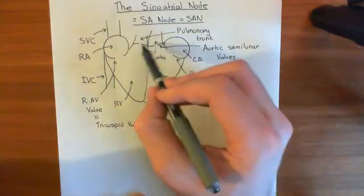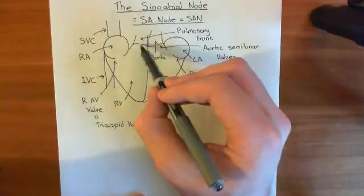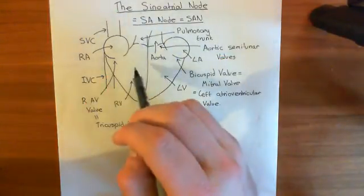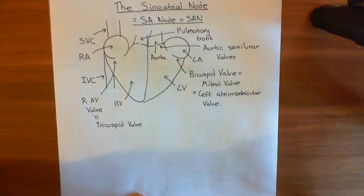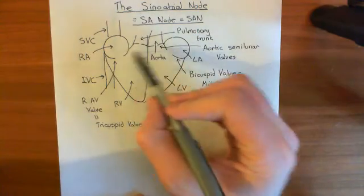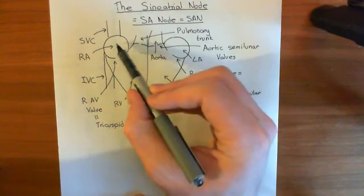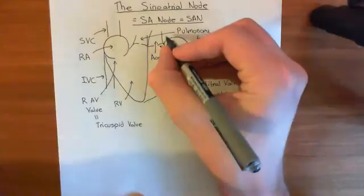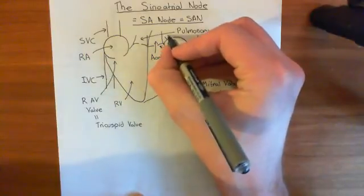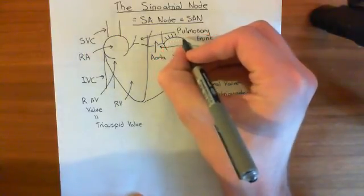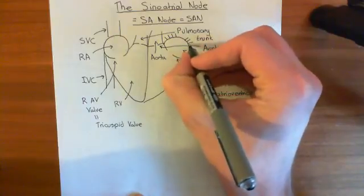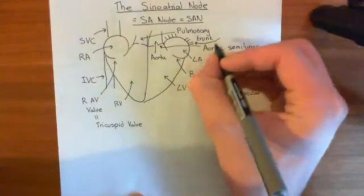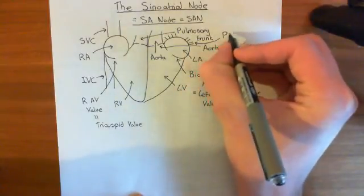That goes for all of these valves. The pulmonic semilunar valve is a one-way gate from the right ventricle into the pulmonary trunk. The atrioventricular valves are a one-way gate from the atria into the ventricles. Finally, we also have the pulmonary veins — four of them, two from each lung — coming into the left atrium. These are the pulmonary veins, PV.